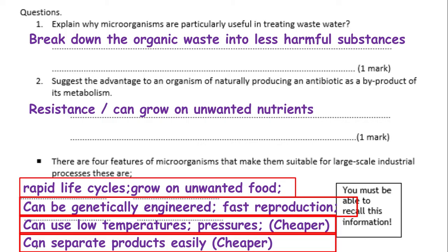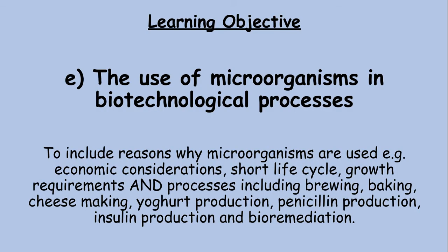Although you don't always get marks for directly saying something is cheaper, you can get marks for explaining why it's cheaper - such as using low temperatures and pressures, and being able to separate the products easily. That covers objective E and all the different microorganisms you need to know.